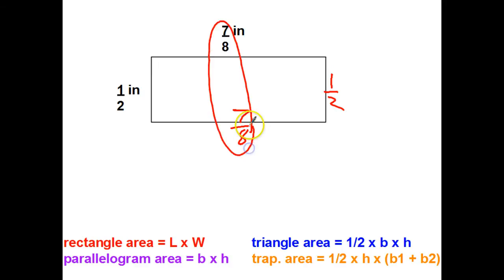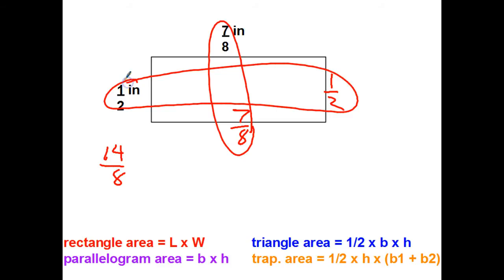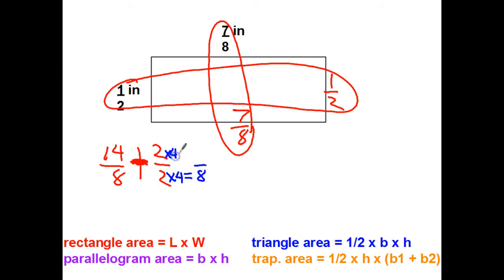For the rectangle: seven-eighths plus seven-eighths equals fourteen-eighths, and one-half plus one-half is two over two. I'm adding fourteen-eighths plus two-halves. I can get the same denominator by converting to eighths — so two times 4 gives eight-eighths. Fourteen-eighths plus eight-eighths equals twenty-two eighths.